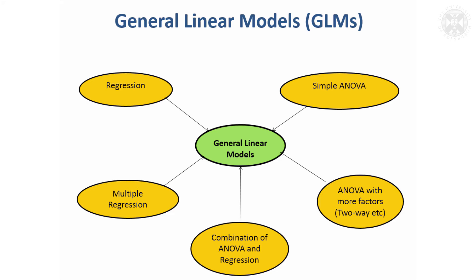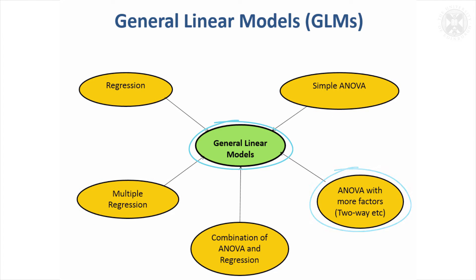Just repeating that slide on general linear models — this is to reiterate that general linear models encompass both regression and ANOVA, and more complex forms of multiple regression and ANOVA with two or more factors. The key thing is that general linear models also allow you to combine the properties of ANOVA, which fits groupings of the data, and regression, which allows you to fit continuous measurements in the model.